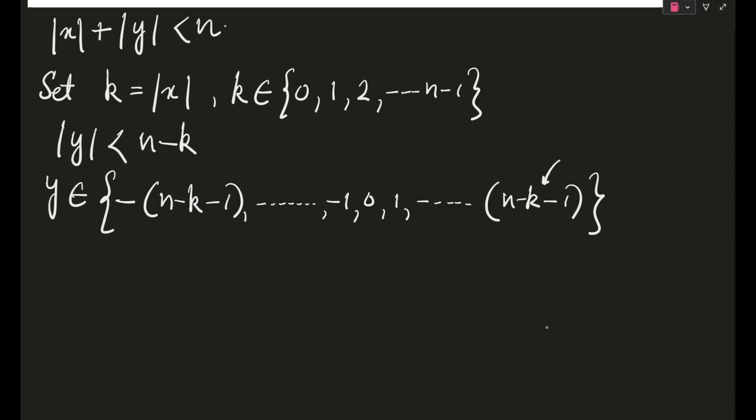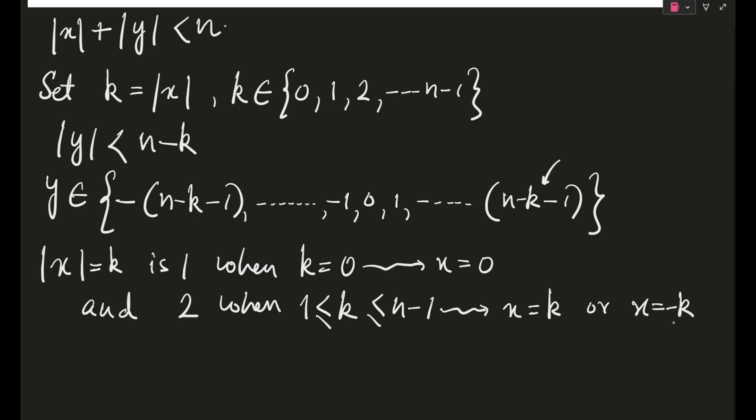So the number of integers with |x| = k is 1 when k = 0, and it is 2 when 1 ≤ k ≤ n-1. You would be a little confused here, so let me clear the confusion. This value would be x = 0. For this particular place, because we have already set k = |x|, this will only be valid when x = k or when x = -k, two values or two choices.